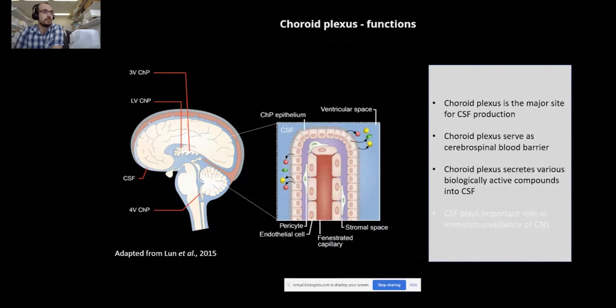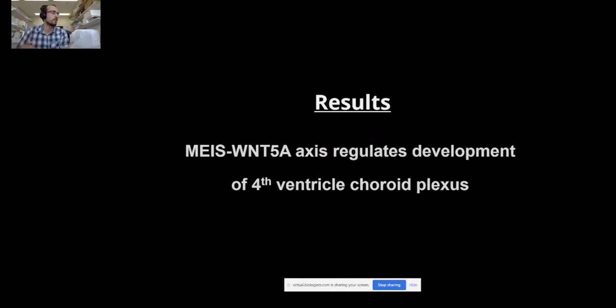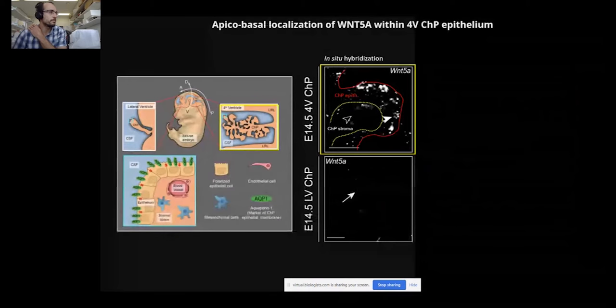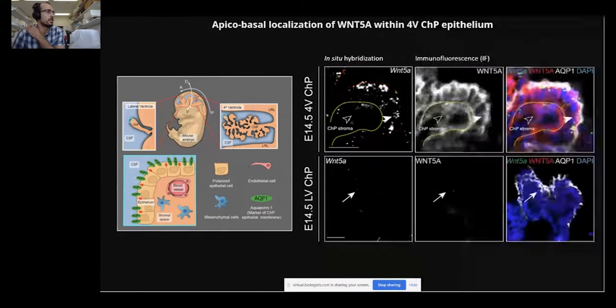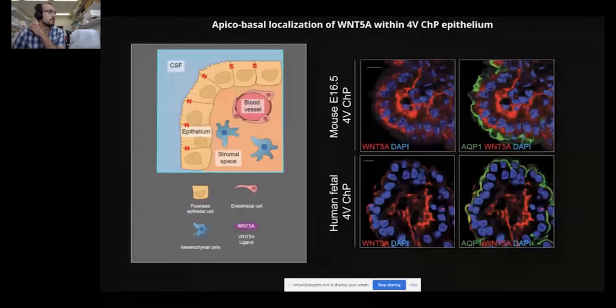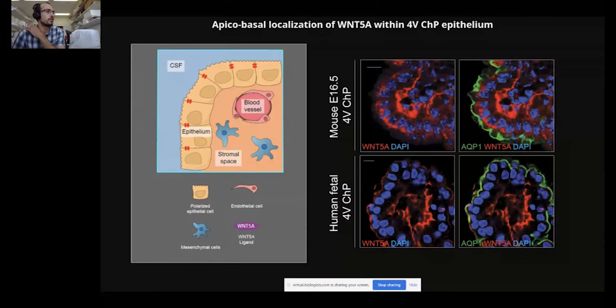Now I would like to jump to the results part of today's presentation. It all started when we noticed that WNT5A is selectively expressed in the fourth ventricle choroid plexus and is completely absent from the lateral ventricle choroid plexus. This pattern also persists at the protein level in the tissue.